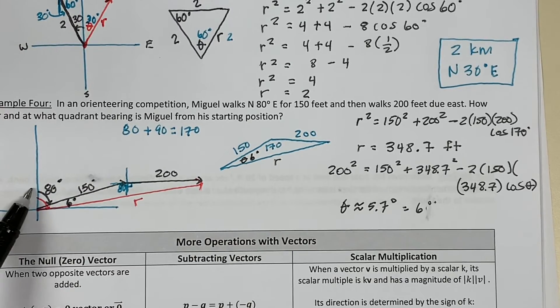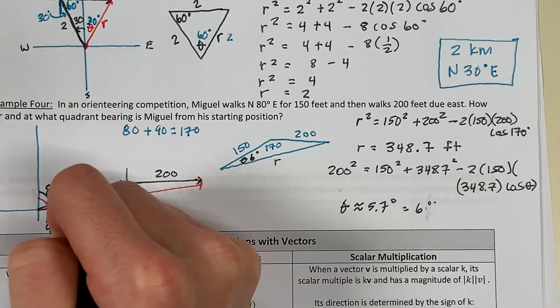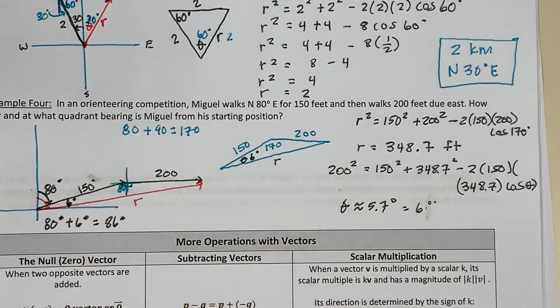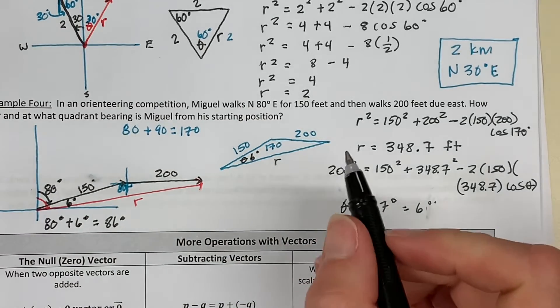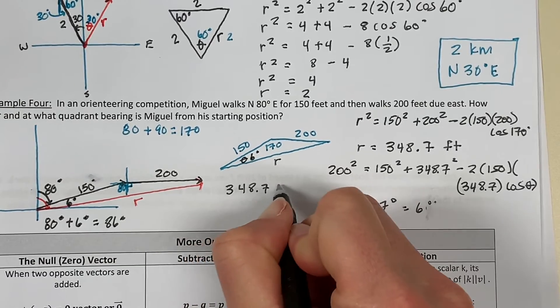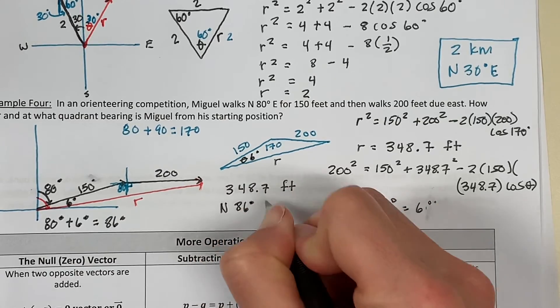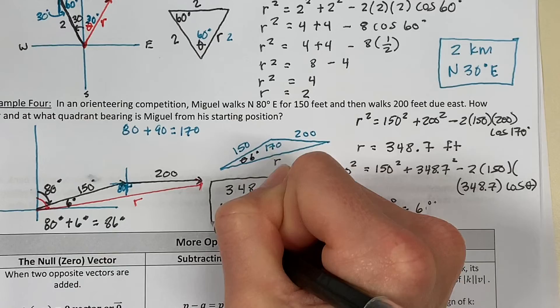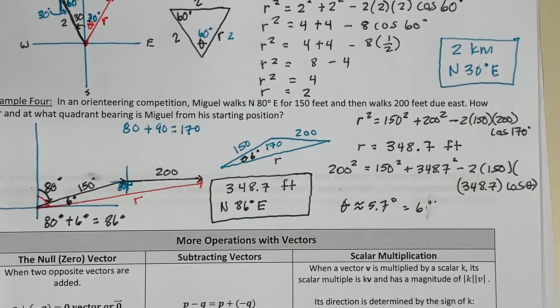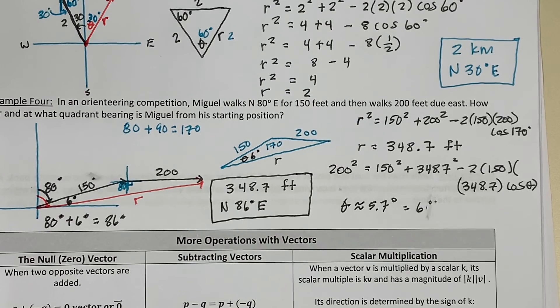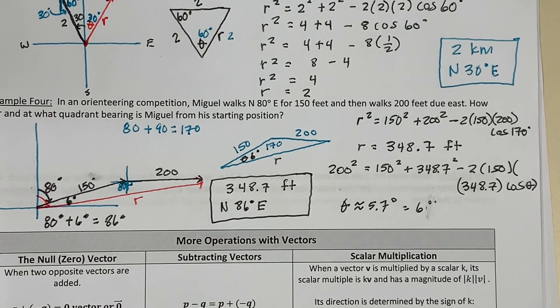Now, if you go back to our picture and you put this inside the triangle at 6 degrees, we need the angle from north to the resultant vector. So, this angle is going to be 80 degrees plus 6 degrees. So, we are 348.7 feet from a starting position at a quadrant bearing of north 86 degrees east. Now, you're going to have an opportunity to practice these problems. They're not easy so I would like for you to make sure you draw a good picture. Attempt to find an alternate interior angle that is congruent and then you can use law of cosines or if you have the right triangle trigonometry to find your missing sides and angles. Good luck.